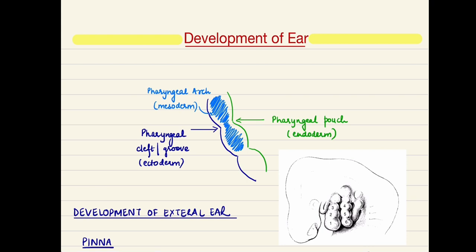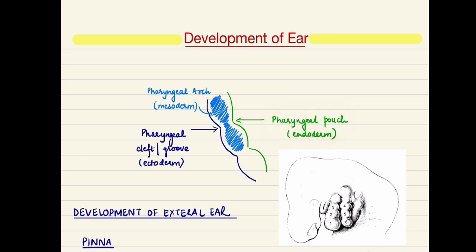Covering this mesoderm on the outer side is the ectoderm. The constriction between the first and second arch on the ectodermal side is known as the pharyngeal groove, which is the ectodermal component. On the inside is the pharyngeal pouch, which is the endodermal component, depicted in green color. So that was about the pharyngeal arches.